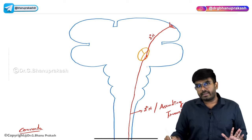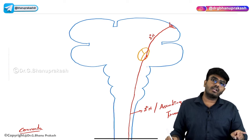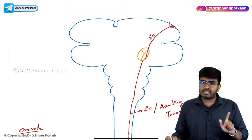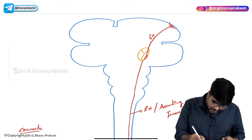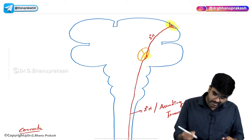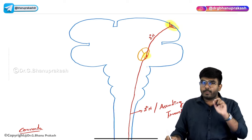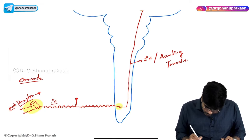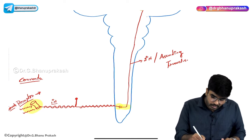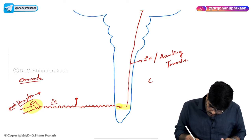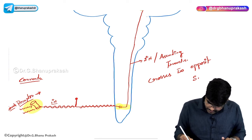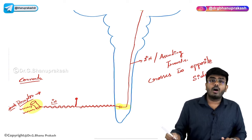So in a sensory pathway there are three orders of neurons. An important point: the first order neuron ends in the spinal cord, the second order neuron usually crosses to the opposite side and ends in the thalamus, and the third order neuron goes from the thalamus to the cortex.